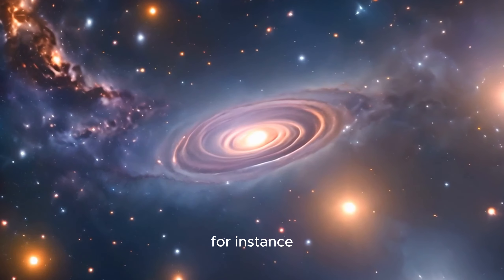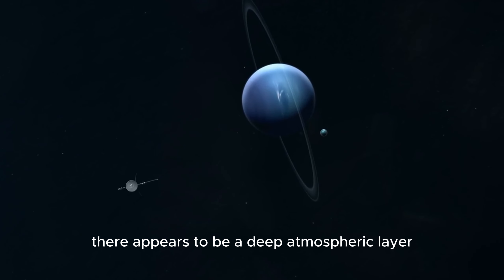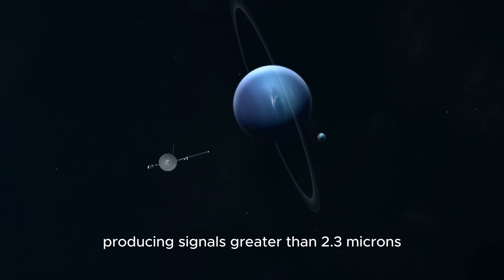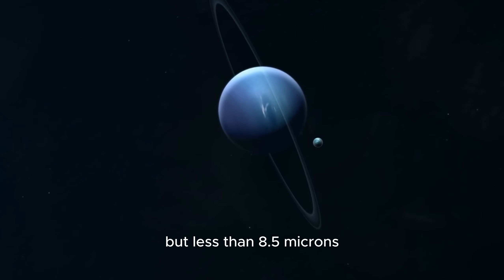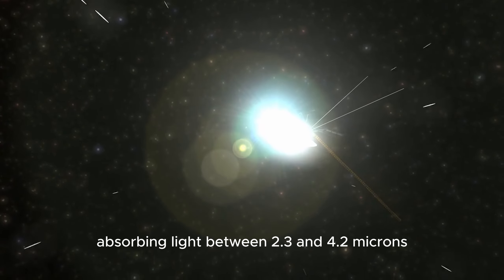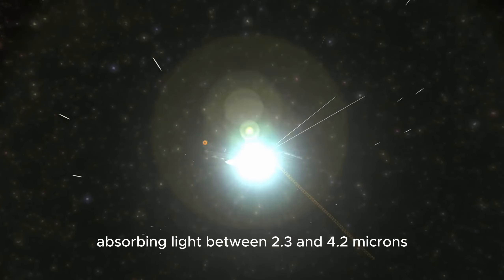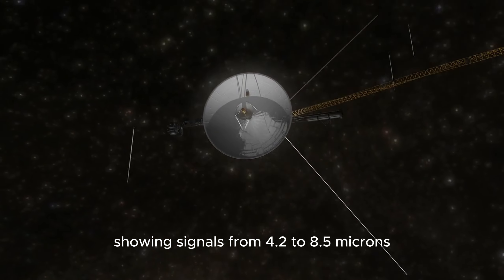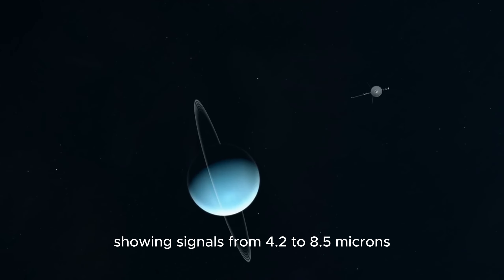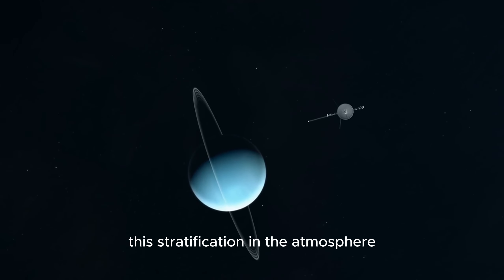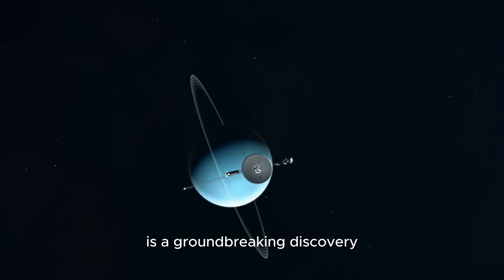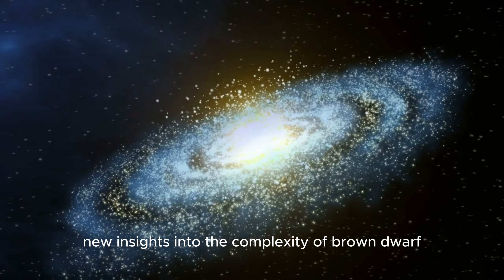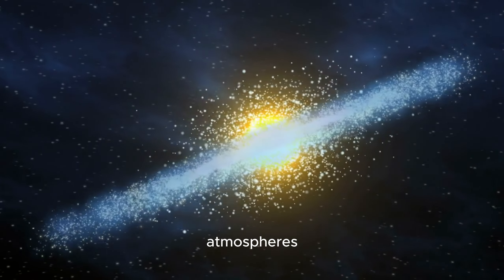For instance, there appears to be a deep atmospheric layer producing signals greater than 2.3 microns but less than 8.5 microns, an intermediate layer absorbing light between 2.3 and 4.2 microns, and a high-altitude layer showing signals from 4.2 to 8.5 microns. This stratification in the atmosphere is a groundbreaking discovery, offering new insights into the complexity of brown dwarf atmospheres.